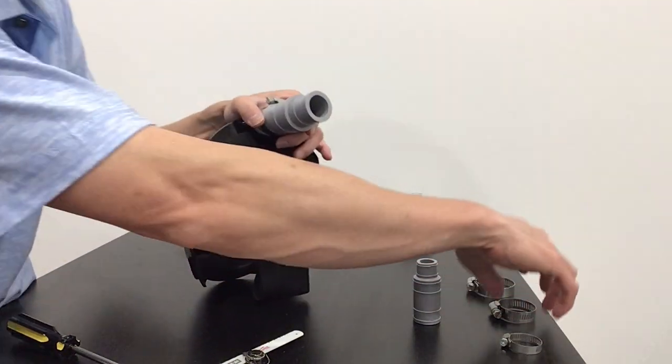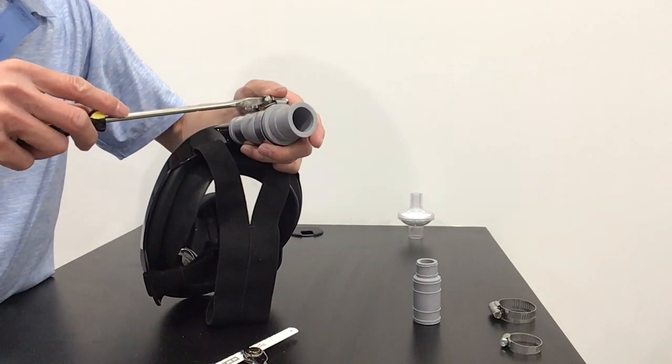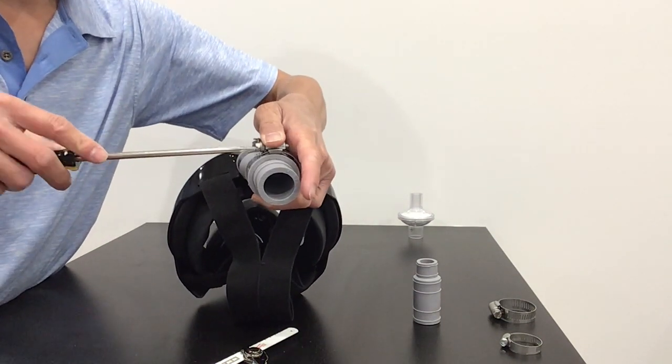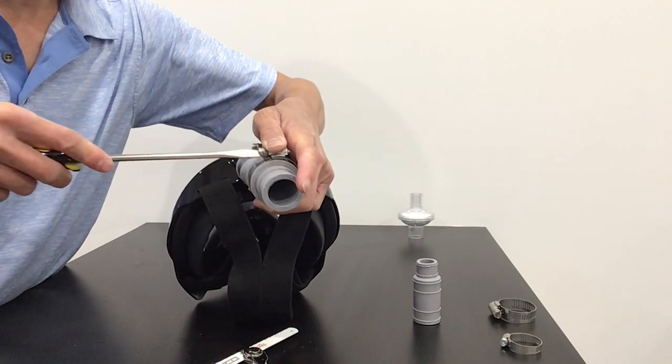Then you're going to take your next coupler, go right on top of that, and once again, squeeze these a little bit so it makes an oval shape, more of an oval shape than a round shape, and then you tighten it down.